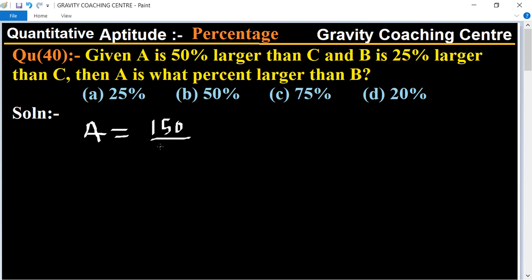And B is 25 percent larger than C, so B equals 125 upon 100 of C. Now finding the difference...